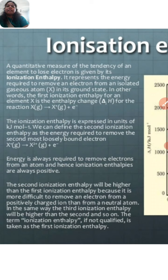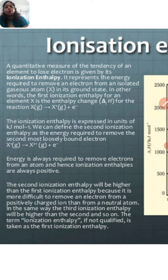The ionization enthalpy is expressed in units of kilojoules per mole (kJ mol⁻¹). We can also define the second ionization enthalpy as the energy required to remove the second most loosely bound electron. The value of ionization enthalpy is higher when removing the second electron.